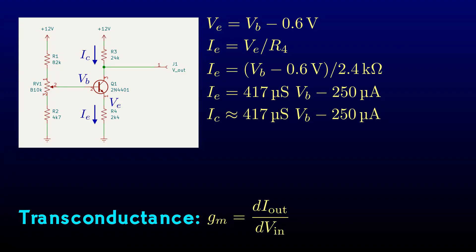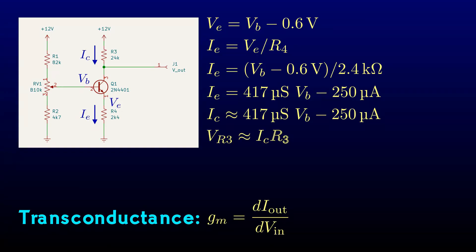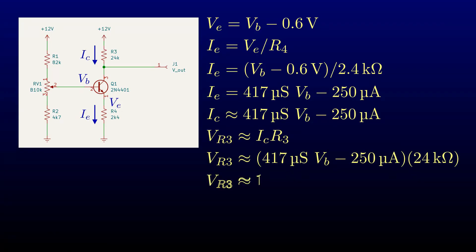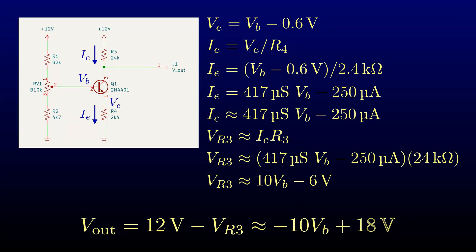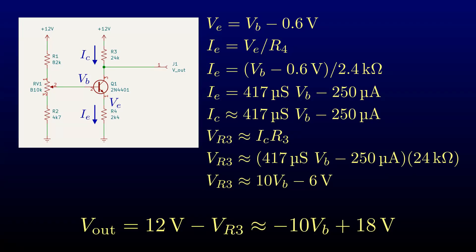The usual symbol for transconductance is G sub M. G is the usual symbol for conductance, with the lowercase letter indicating an incremental change. The subscript M reflects the fact that transconductance used to be called mutual conductance — you hardly ever hear that term anymore, but the notation has outlasted the terminology. The voltage drop across the collector resistor is the collector current times its resistance. The output voltage is 12 volts from the power supply minus the drop across the collector resistor, making it negative 10 times the input voltage plus 18 volts. The gain of this amplifier is negative 10 and its DC output offset is 18 volts.